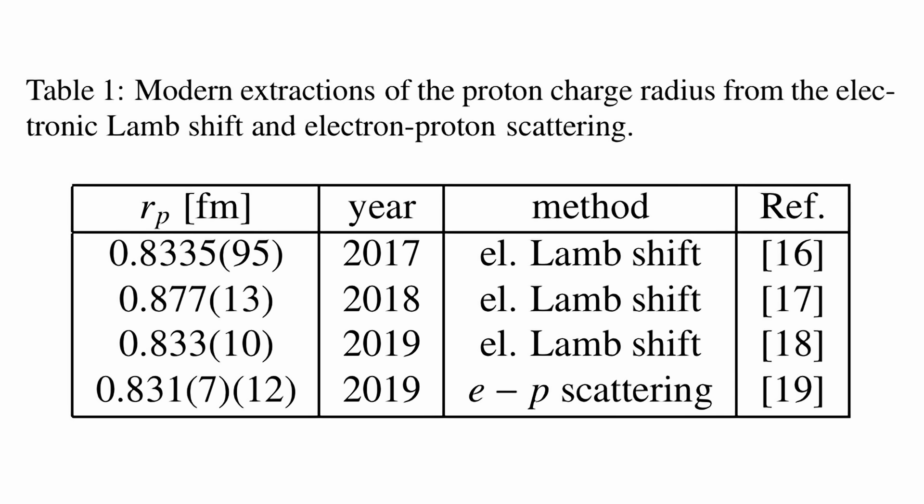The issue became known as the proton radius puzzle, and despite improvements in experimental techniques, it has remained unresolved. If the discrepancy were simply due to measurement error, we would expect it to be resolved over time. But this hasn't happened.